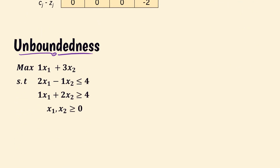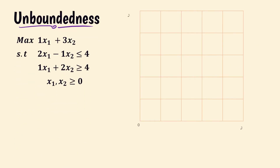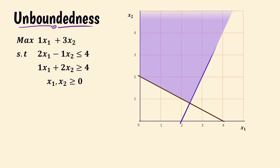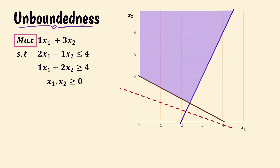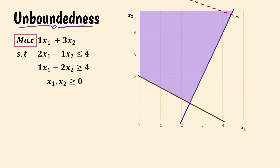Next we discuss unboundedness. Since this is a maximization problem and we can increase the objective function value indefinitely, we say we have a situation called unboundedness.